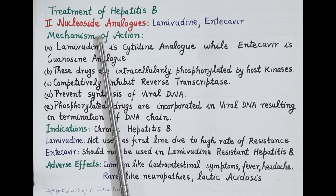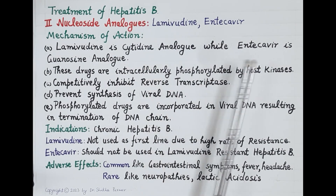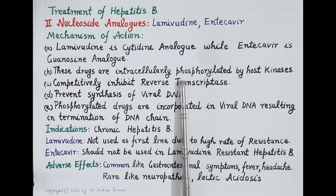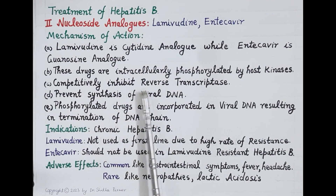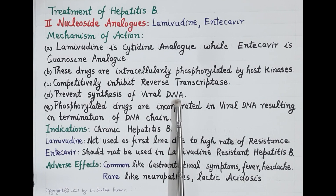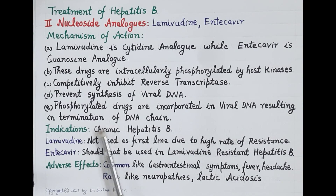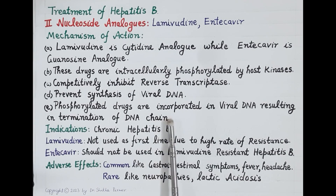The second category of drugs are the nucleoside analogues — lamivudine and entecavir. Lamivudine is a cytidine analogue while entecavir is a guanosine analogue. Like nucleotide analogues, these drugs are also intracellularly phosphorylated by host kinases, and after phosphorylation they competitively inhibit the viral enzyme reverse transcriptase, preventing synthesis of viral DNA from pre-genomic RNA. These phosphorylated drugs also get incorporated into the viral DNA being formed, resulting in chain termination, thus preventing replication of hepatitis B virus. Both drugs are used in the treatment of chronic hepatitis B.